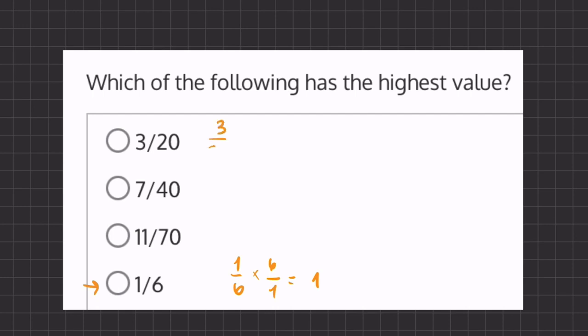So let's start with three over 20. If we multiply by six over one, we get 18 over 20.